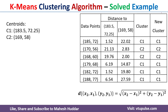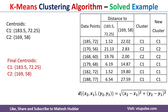If you notice, the previous cluster assignment and the new cluster assignment look exactly the same, meaning the data points have converged. The first cluster contains four data points and the second cluster contains two data points. The final centroids are (183.5, 72.25) and (169, 58). This is how we apply the k-means clustering algorithm to divide a dataset into different clusters.